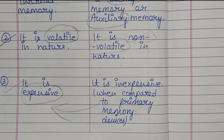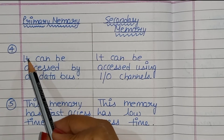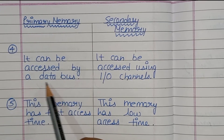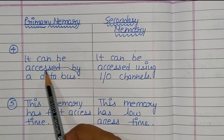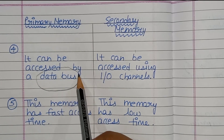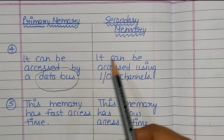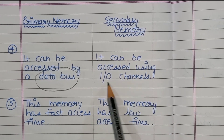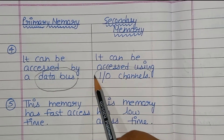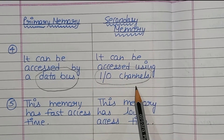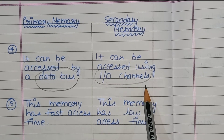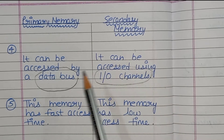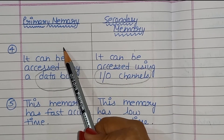The next difference is primary memory can be accessed by the data bus, while secondary memory can be accessed using input-output channels. In the exam, you can also be asked that input-output channels are associated with secondary memory access.